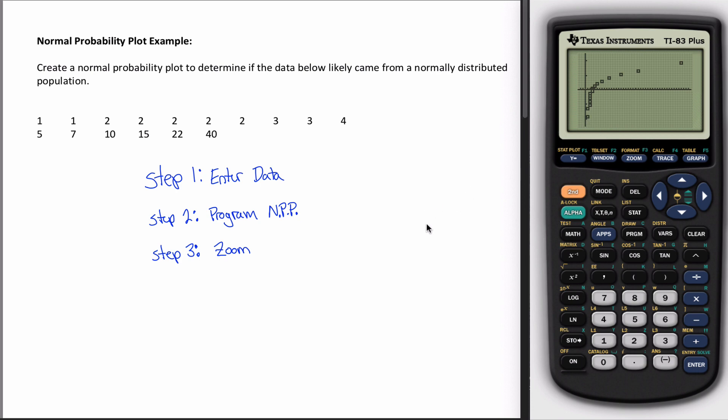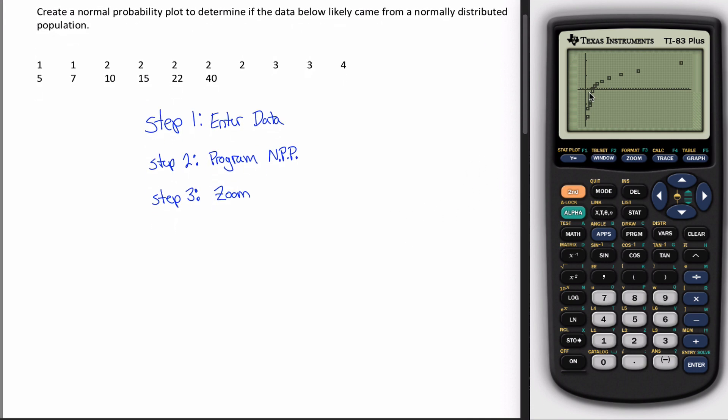There's my normal probability plot. I suppose you need to know what this means. So what we have here with our normal probability plot is you got to be able to think about each of these little boxes in terms of their x value, how far left and right it is, and their y value, how far up and down it is.